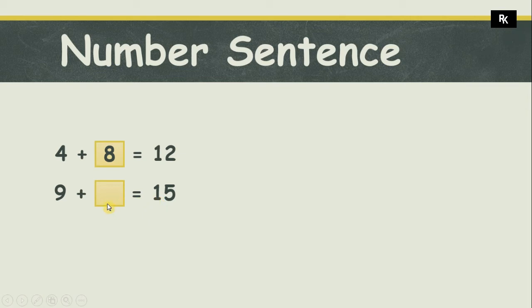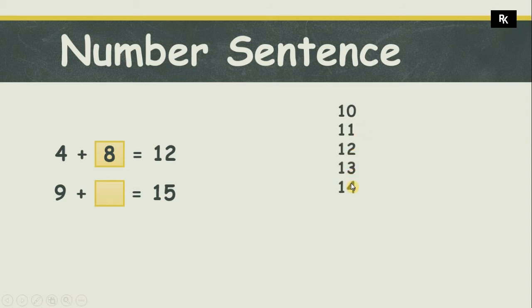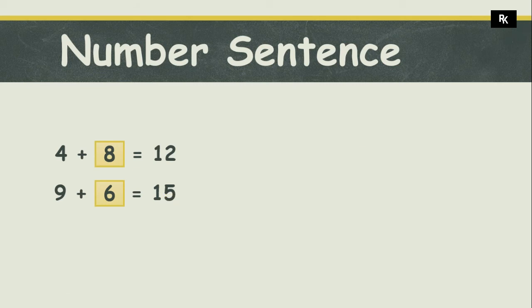Let's move to the next example. Here I have nine plus blank that is equal to fifteen. I have to find a number, and if I add it to nine it will give me fifteen. Let's start counting after nine: ten, eleven, twelve, thirteen, fourteen, fifteen. At fifteen I stop because my total was fifteen. After nine to fifteen there are six numbers, so nine plus six is equal to fifteen.